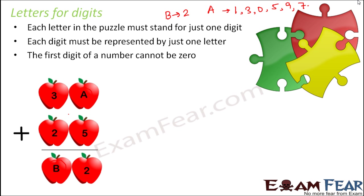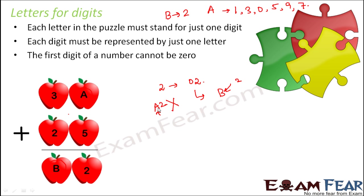The third rule: the first digit of a number cannot be 0. As we know, 2 can be written as 02 in mathematics since 2 and 02 mean the same. But when dealing with these puzzles, you are not supposed to write a letter representing 0 before a number. For example, if you write B for 2, that is fine — B represents 2. But if you write A2 where A is 0, that is not allowed. Basically, you should not write 0 before a number. So in this case, B2 means this B cannot be 0.